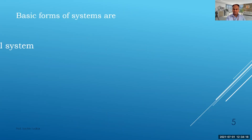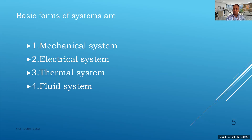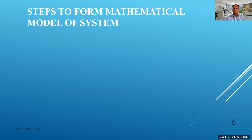The basic forms of systems are: mechanical systems — which we are primarily interested in — electrical systems, thermal systems, and fluid systems. We are going to see each one in our next lectures. In this lecture, we are going to see how to form the mathematical model of mechanical systems.